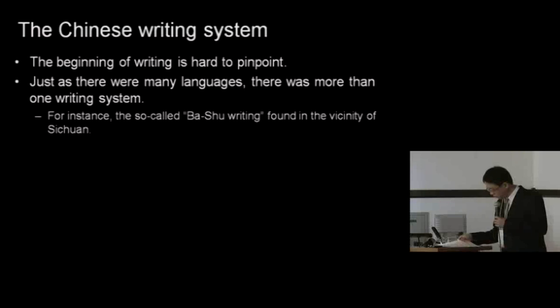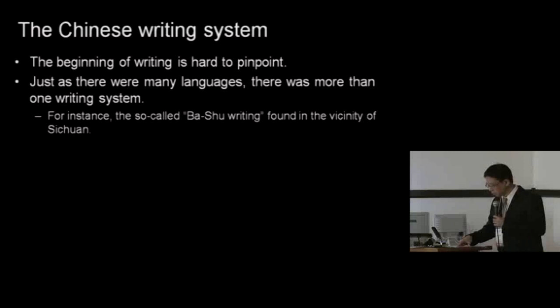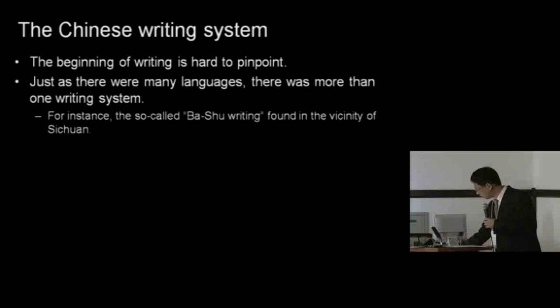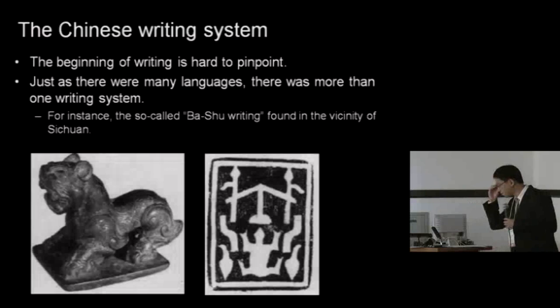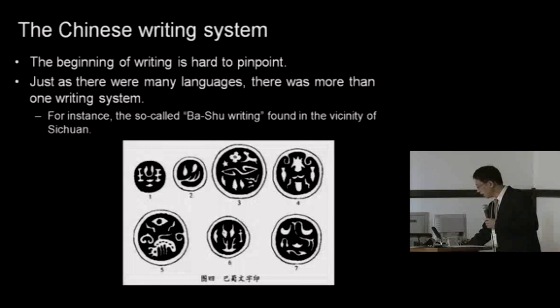For instance, there's the case of what's usually called Bashu writing or Bashu symbols, a script found in the vicinity of Sichuan. It's unclear what the relation is between this and Chinese writing or even the Chinese language, because to this day the script of this Bashu writing remains undeciphered. Here are just a couple of examples — what is clearly writing described on seals, but the meaning of which is unknown or unclear. And some further examples also on seals.